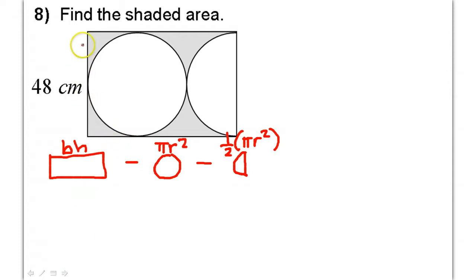Let's see. Well, this side of the rectangle is 48. Okay, so that's this right here. That red line I just drew is 48.